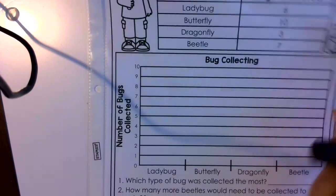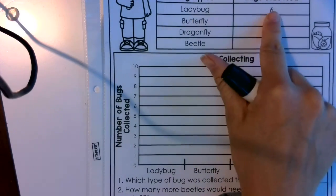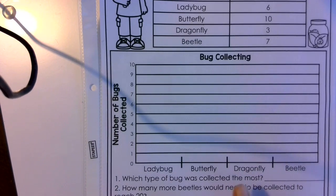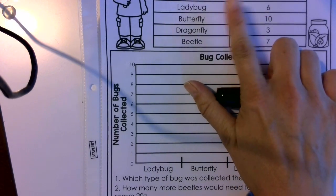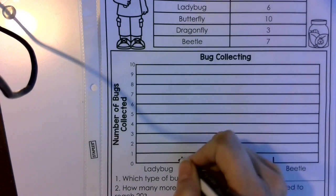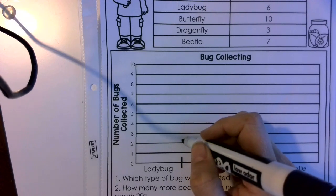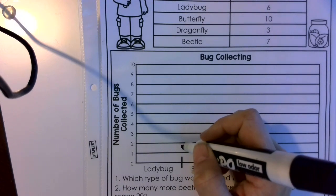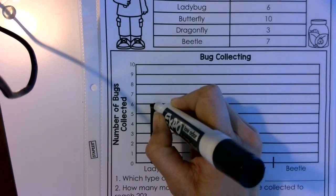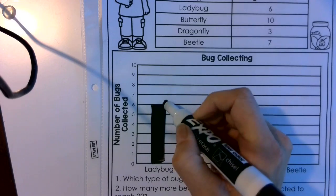Down here it already has our graph labeled with the number of bugs collected. So this is where we're going to look — the ladybug has six collected. We're going to graph it here, and they've already got it labeled with the types of bugs down here. So the first one is ladybug and it has six. You're going to go over here and go up to six. You can make it as wide as this line here, and you can color with any color you want, or if you just want to use a pencil, you can do that as well. Go all the way up to the six because that's where ladybug is.